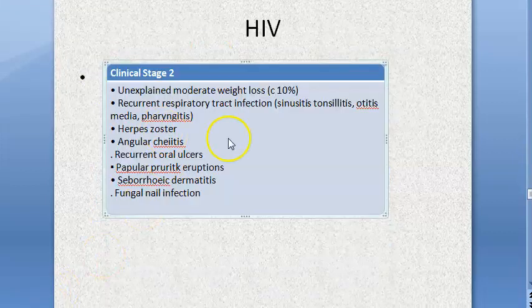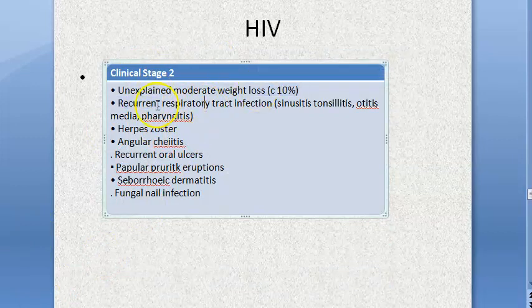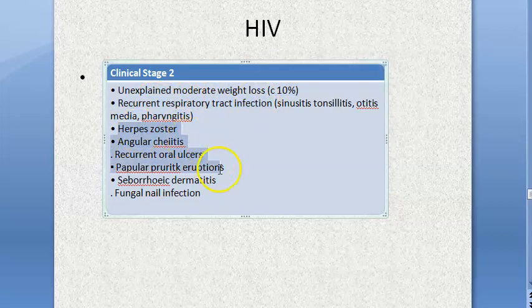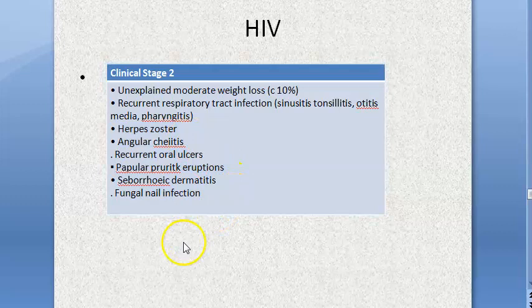In Clinical Stage 2, the patient has unexplained weight loss (less than 10%), recurrent respiratory tract infections, herpes zoster, oral ulcers, and fungal nail infections.